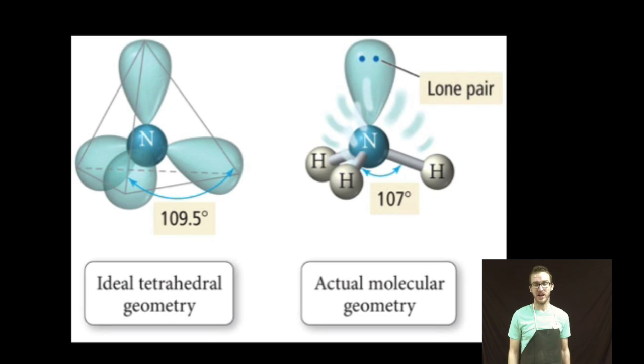However, in a molecule like ammonia NH3, where three of those pairs of electrons are bonded and one is a lone pair, recognize that the bond angle is slightly less than that 109.5 degrees. And that's because that lone pair can actually repel a little more strongly.